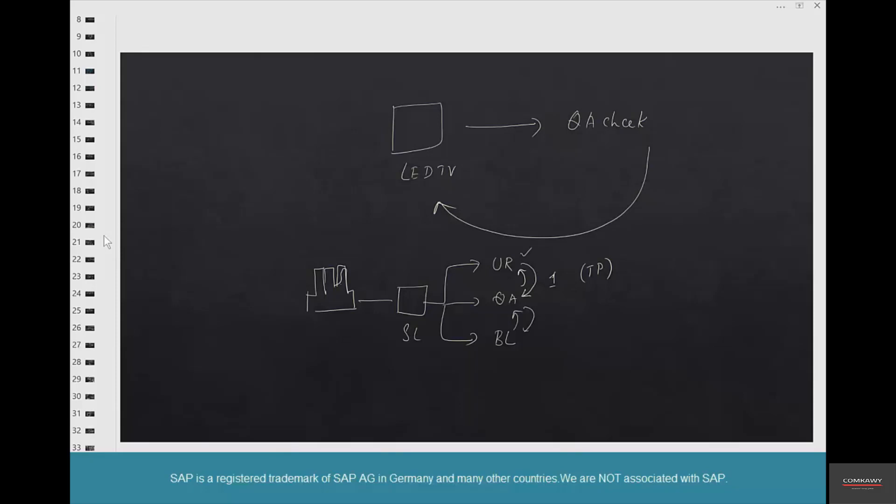And once the quality check is done, they put a sticker on it and then put it back to unrestricted stock. And all of this is done using transfer posting because it's not really a big physical movement. There's no change in value, nothing of that sort. It's just moving to a different state.